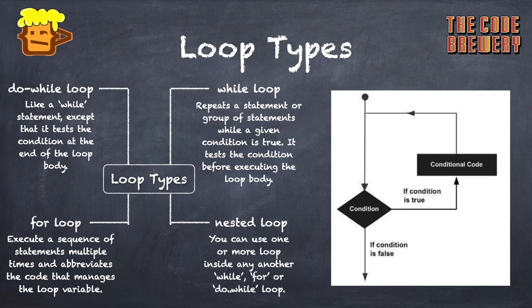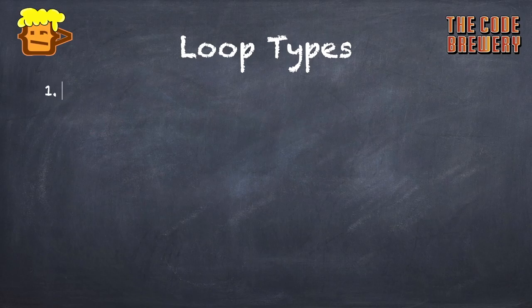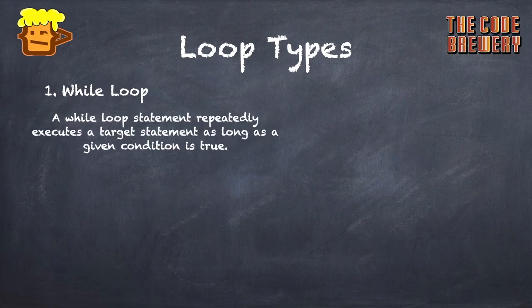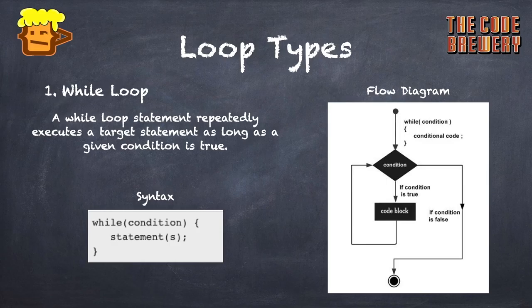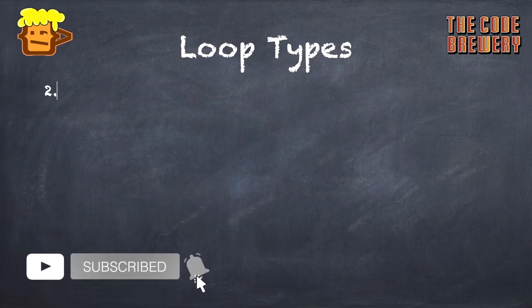Now let's learn about the while loop in detail. The while loop repeatedly executes a target statement as long as the given condition is true — it will loop unless and until the condition becomes false. The syntax is: while (condition) { statements }. From the flow diagram, we can see that first the while condition is evaluated; if true we go inside the code block, otherwise we come outside and it won't even loop once if the condition is false from the start.